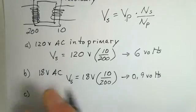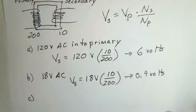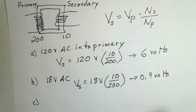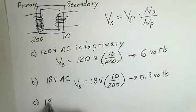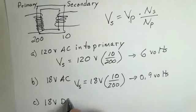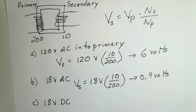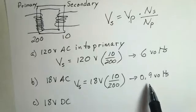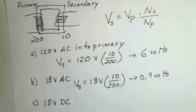Our last case, we're going to connect this transformer up to a battery, an 18 volt battery. So we have direct current going through. Well, the numbers haven't changed. Will we get 0.9 volts across the secondary coil?